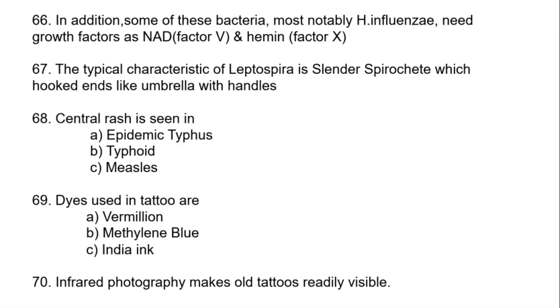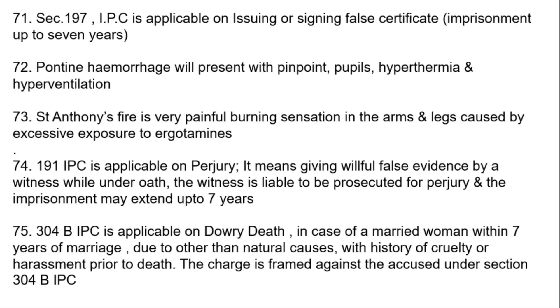The typical characteristic of Leptospira is a slender spirochete with hooked ends like an umbrella handle. Enteric rash is seen in endemic typhus, typhoid, and measles. Dyes used in tattoos are vermilion, methylene blue, and India ink. Infrared photography makes old tattoos readily visible.